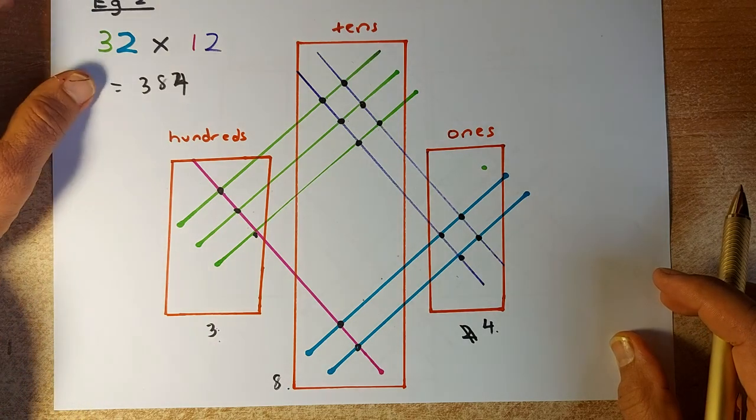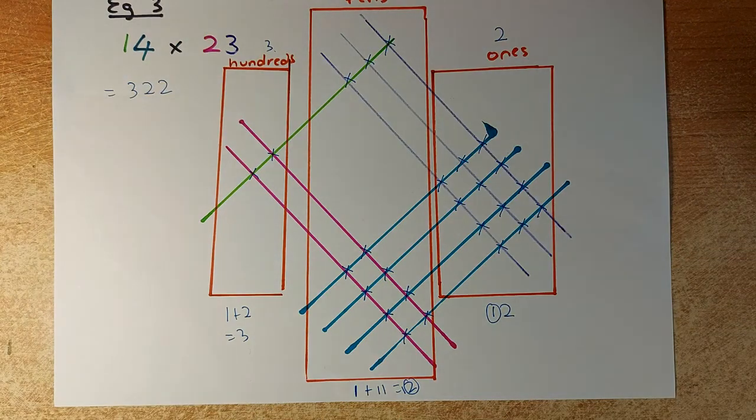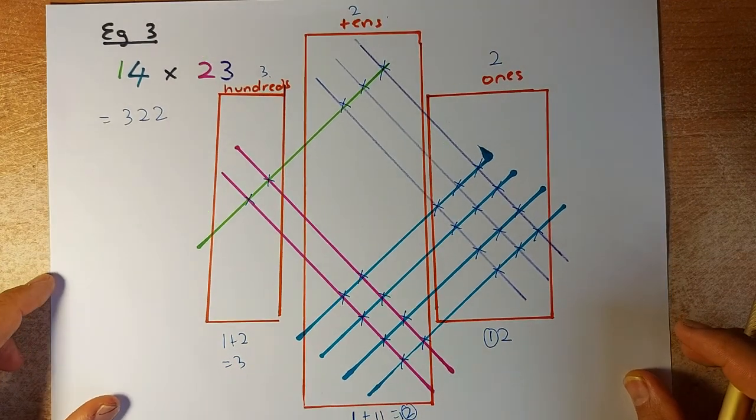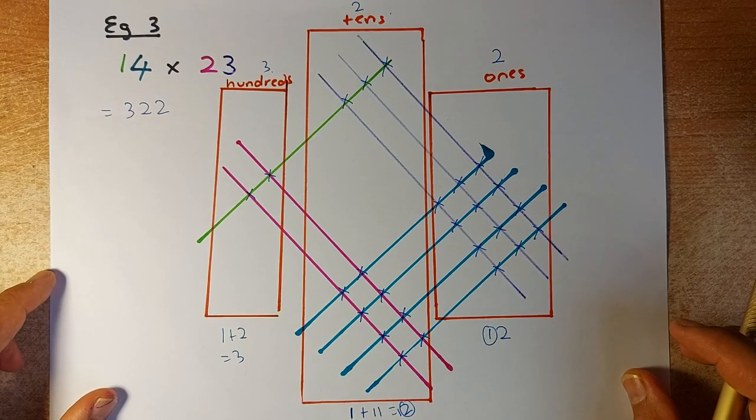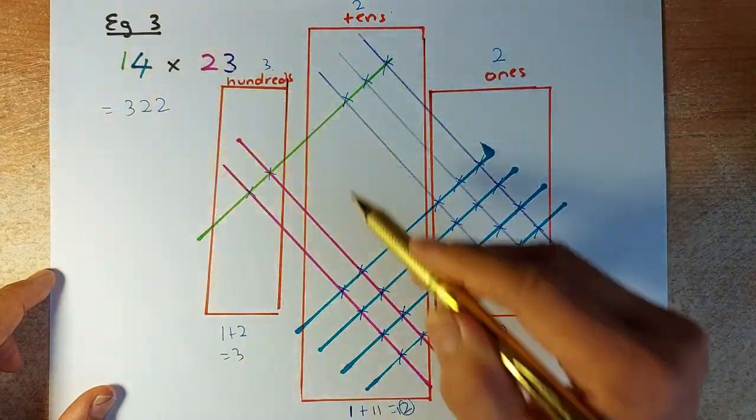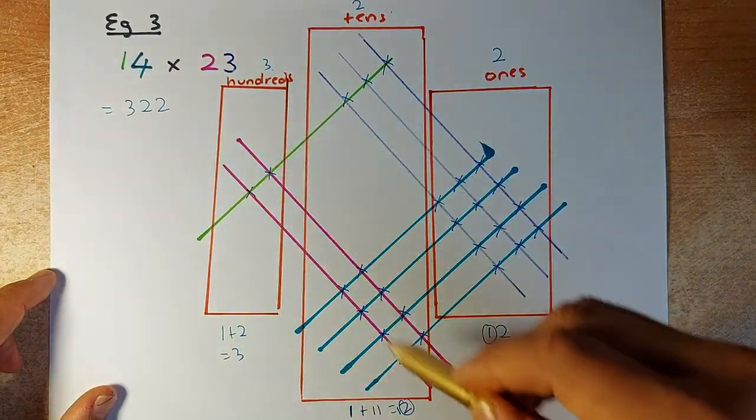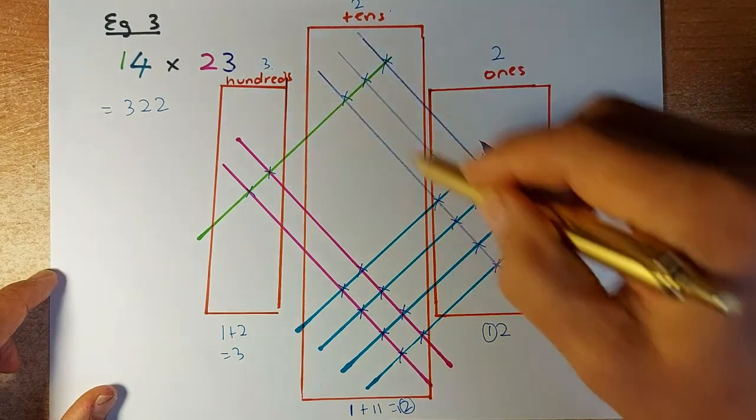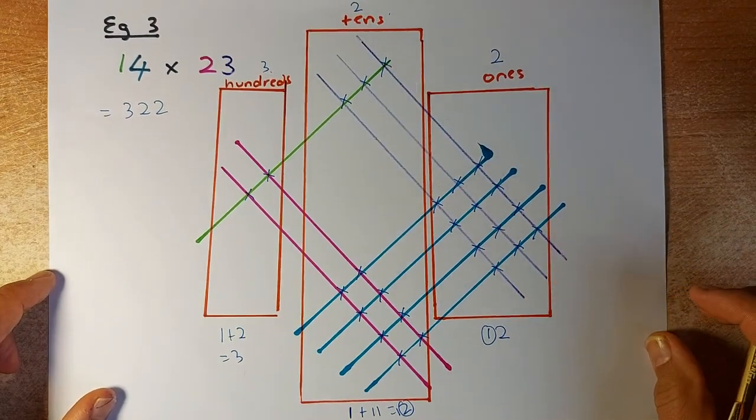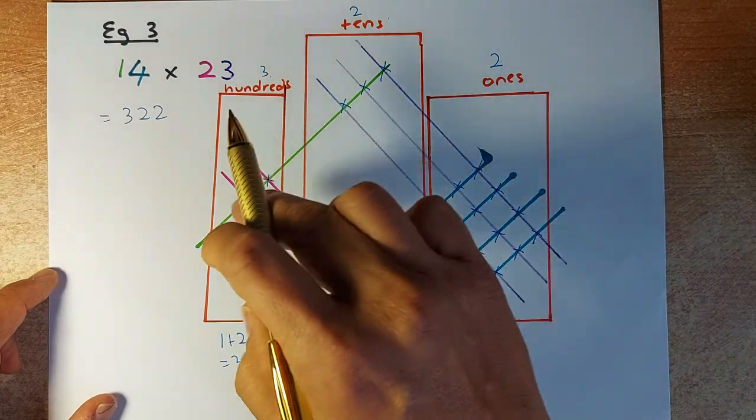The last example is the hardest of the lot. When you have a slightly bigger number, 14 multiplied by 23. Again, 1 green line, 4 blue lines, 2 pink lines, and 3 purple lines. Now the next step, divide into 3 regions: the ones, the tens, and the hundreds.